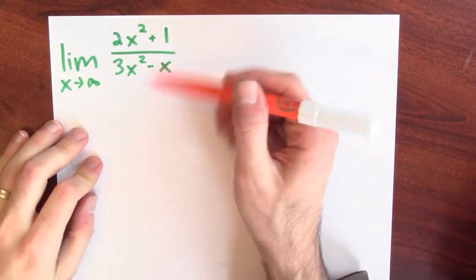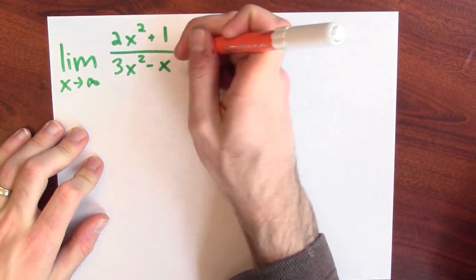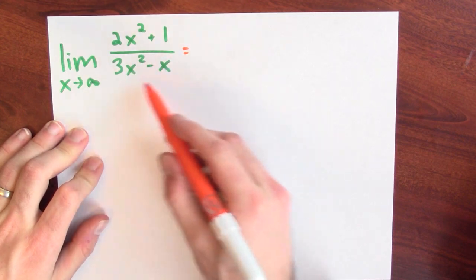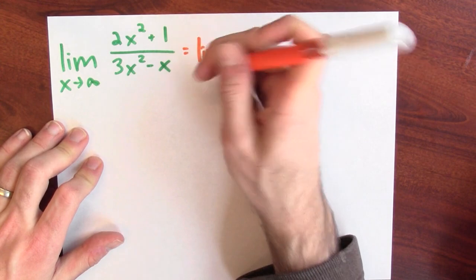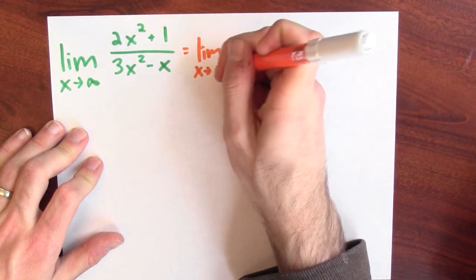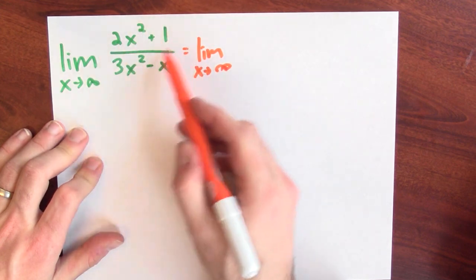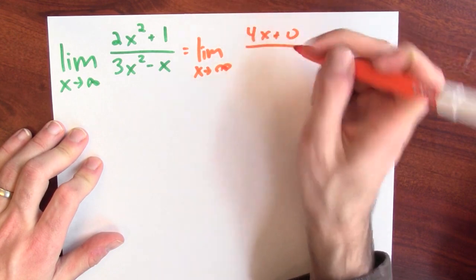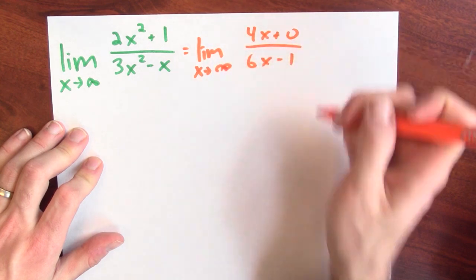Let's take a look at an example. This is an example you really don't need to use L'Hôpital on, but at least it demonstrates what the technique is. The limit of the numerator is infinity. The limit of the denominator is also infinity, though that's maybe a little bit harder to see. And consequently we could use L'Hôpital, and it would tell us to compute instead the derivative of the numerator, which is 4x plus 0, divided by the derivative of the denominator, which is 6x minus 1.